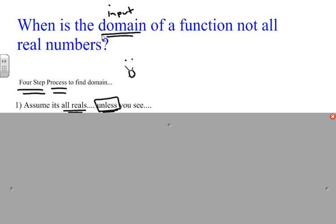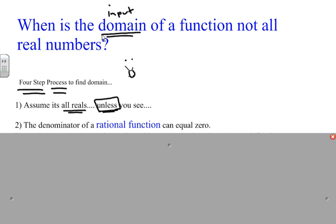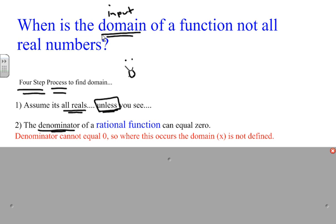It's always all reals unless you notice this: you may see a rational function where the denominator of that rational function can equal zero. Denominators cannot equal zero, so where this occurs, the domain is not defined there. A basic rational function is like f of x over g of x — that's r of x, a rational function — and g of x cannot equal zero.